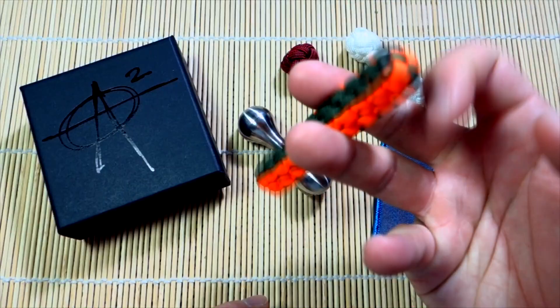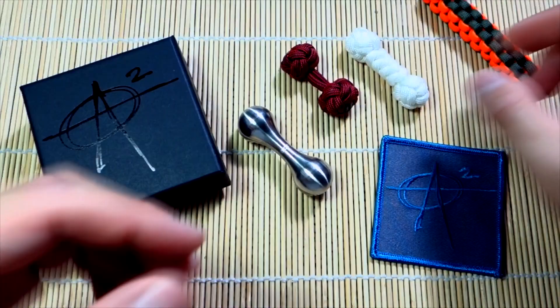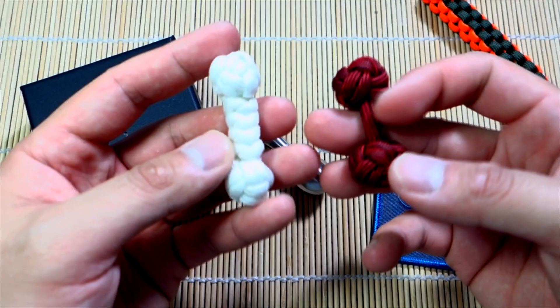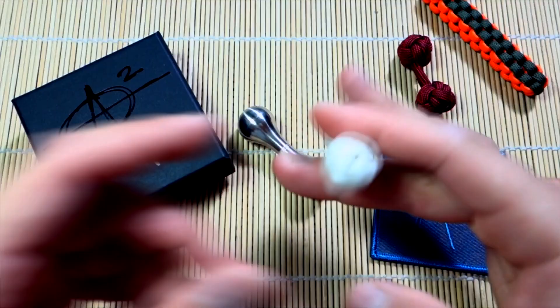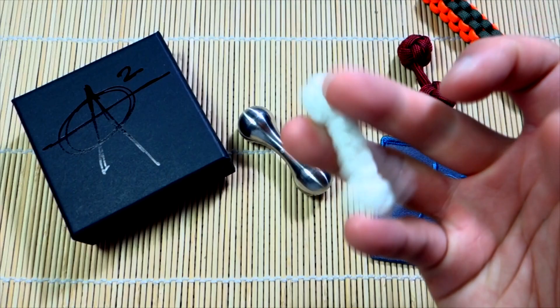Or you know, fidget sticks, whatever you want to call it - fiddle sticks. We have the box knot one here, we did that tutorial. And then of course just recently we did the second version of the paracord knuckle roller.